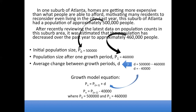Notice the change of sign there — since our population is decreasing, we want to indicate that by subtracting 40,000 whenever computing the population in the next period.